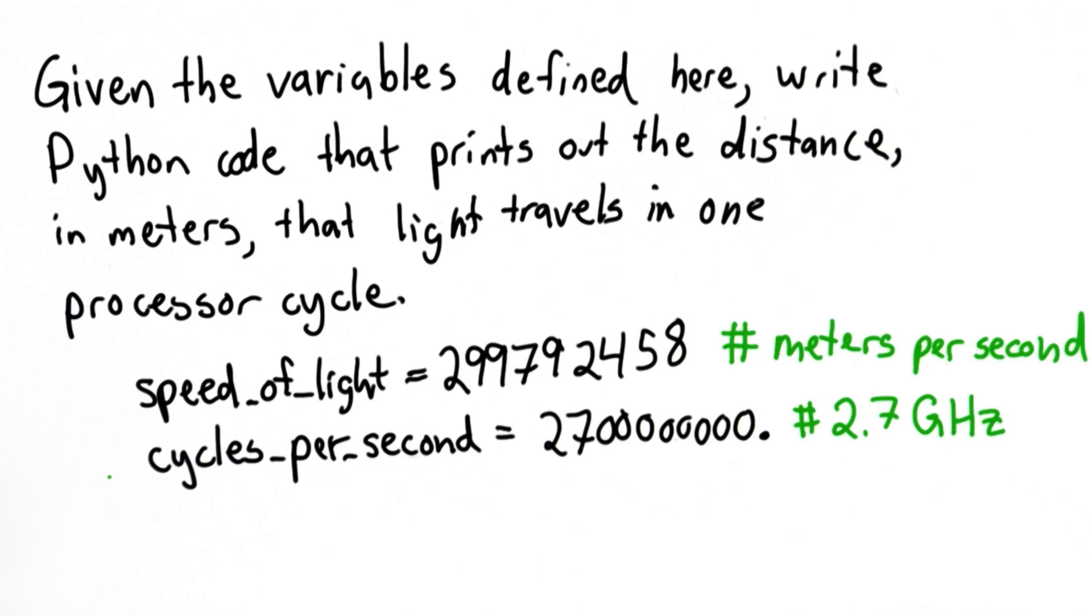Now given those two variable definitions, your goal is to write Python code that prints out the distance in meters that light travels in one processor cycle. We can compute this by dividing the speed of light by the number of cycles per second.